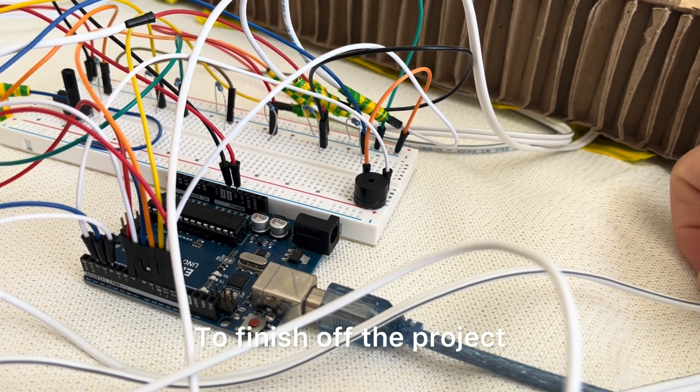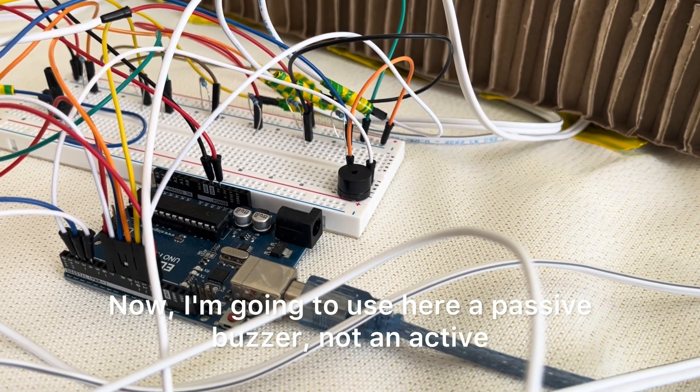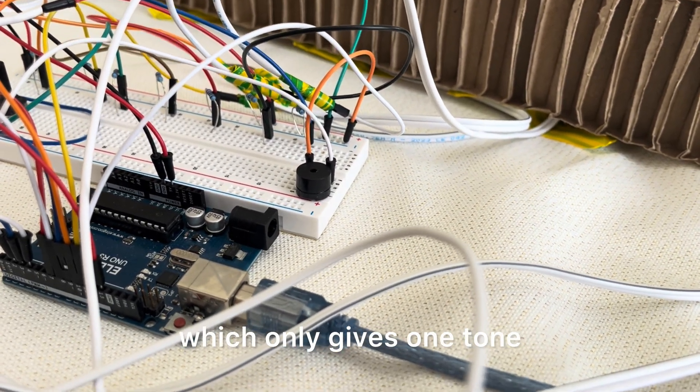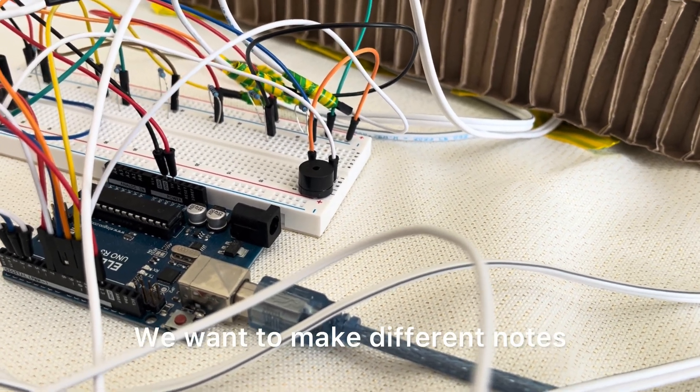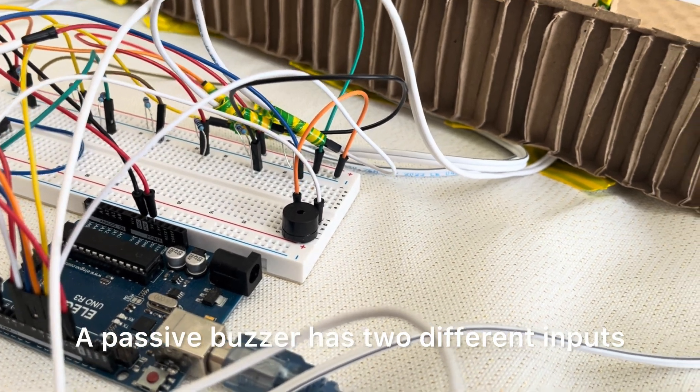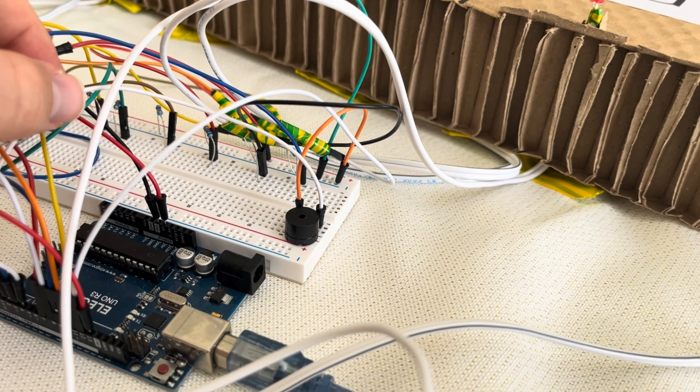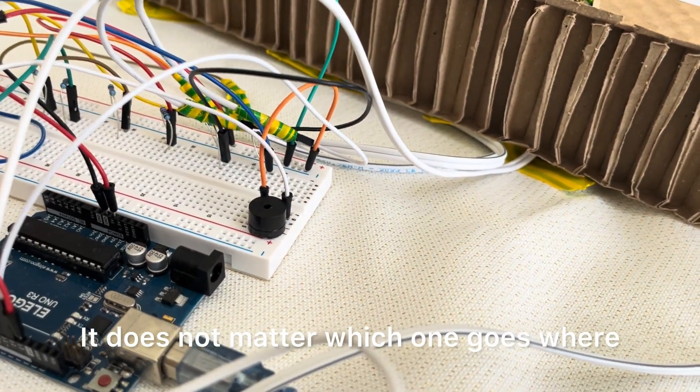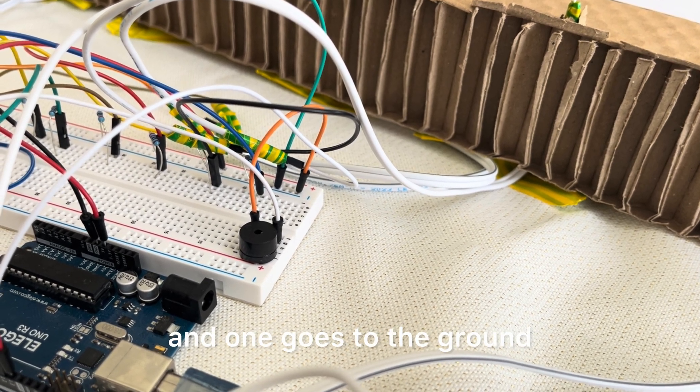To finish off the project, we have the buzzer. Now, I'm going to use here a passive buzzer, not an active. There's two types of buzzers. An active buzzer only gives one tone. It's connected to the five volts, and it gives one tone. We don't want that. We want to make different notes. So we're going to use a passive buzzer. A passive buzzer has two different inputs. One goes to the pin. In our case, it's pin number two. And then the other one goes to ground. It does not matter which one goes where. Just one needs to go to the pin, in our case, pin number two, and one goes to the ground.